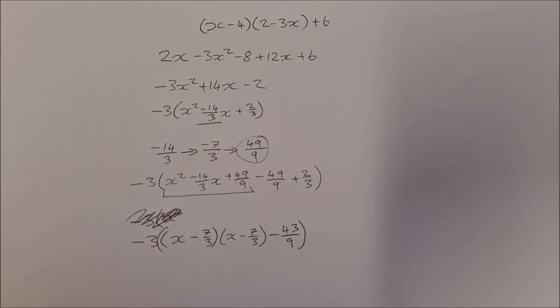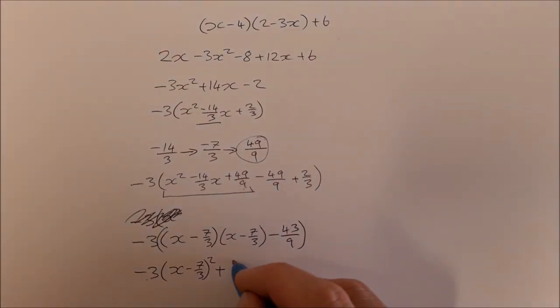And then the last step, just to tidy it up then, we have minus 3 times x minus 7 over 3 squared. And then we can multiply the minus 3 by the minus 43 over 9, and that'll give us plus 43 over 3.